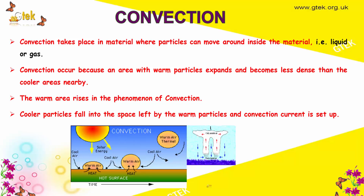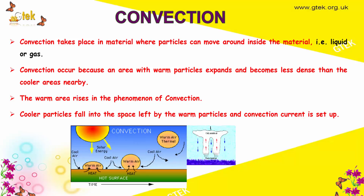Now let's move on to convection. Convection takes place in materials where particles can move around inside the material — examples include liquids and gases. Convection occurs because an area with warm particles expands and becomes less dense than the cooler areas nearby. The warm area rises, and cooler particles fall into the space left by the warm particles, thereby setting up a convection current.